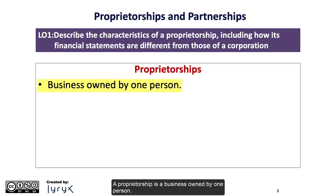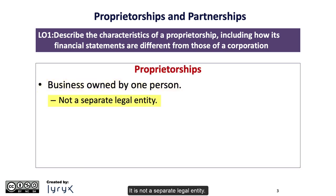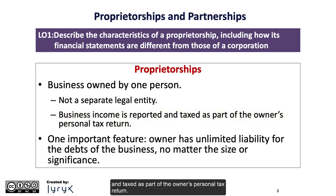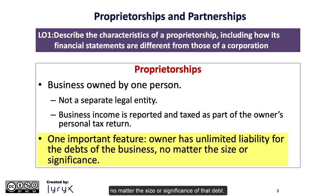A proprietorship is a business owned by one person. It is not a separate legal entity. From an income tax perspective, the business income is reported and taxed as part of the owner's personal tax return. One important feature is that the owner has unlimited liability for the debts of the business, no matter the size or significance of that debt.